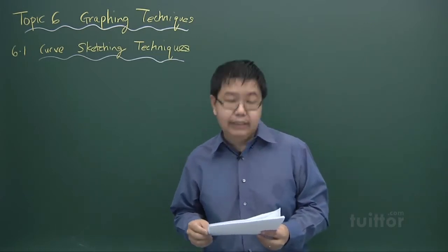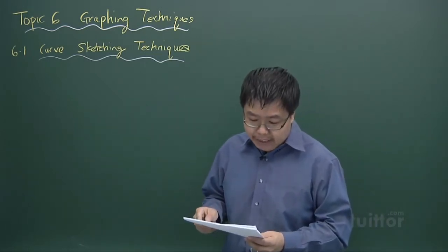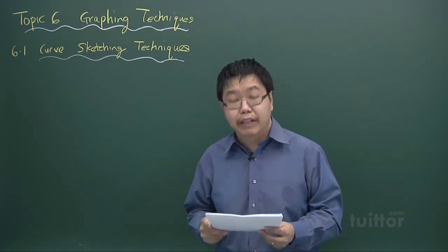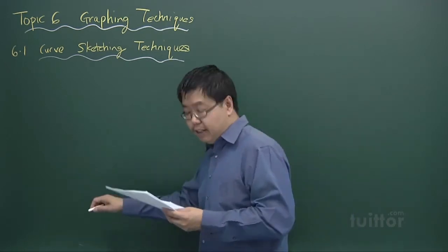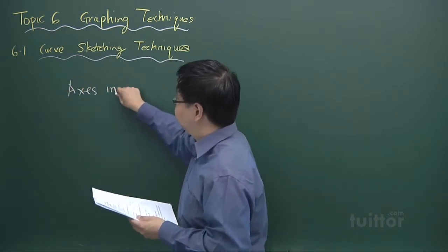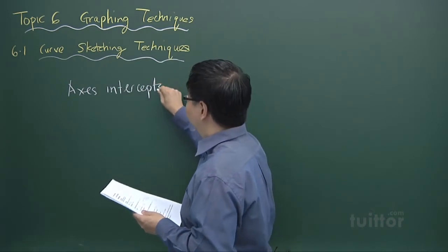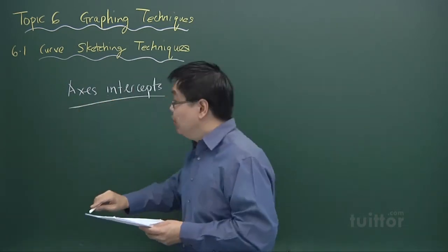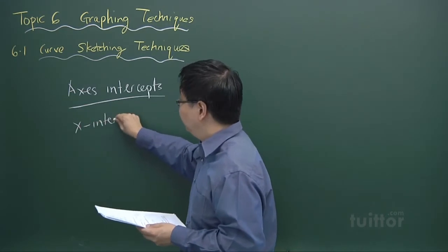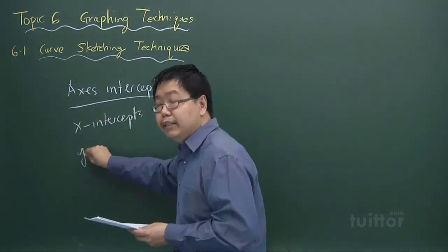Now let's download the 6.1 handout. The first part we'll be going through are characteristics of a curve. The first characteristic of a curve is this thing called x and y intercepts.